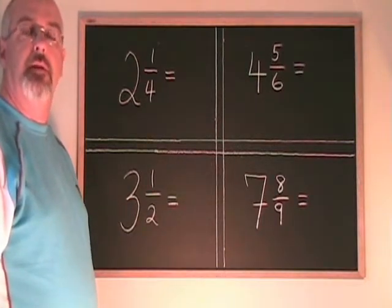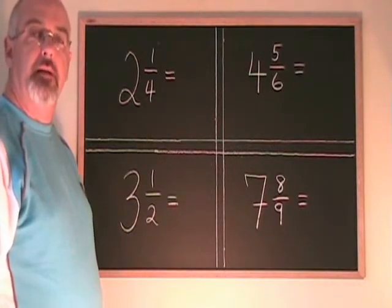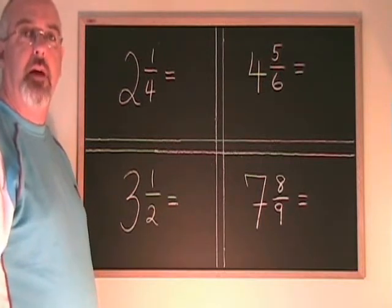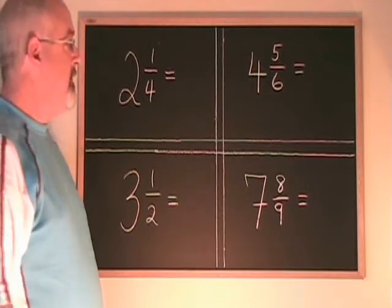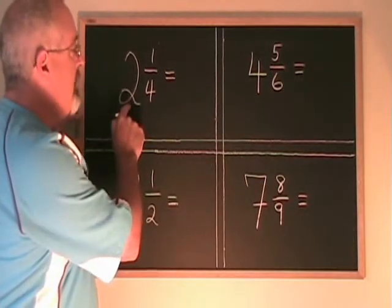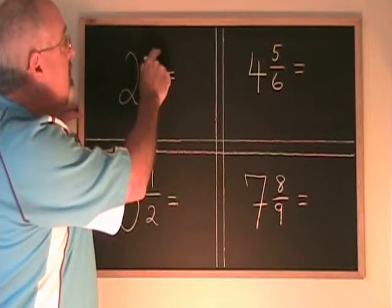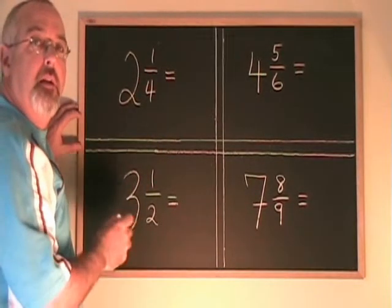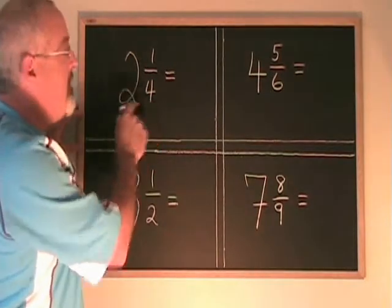Converting mixed numbers to improper fractions is a skill that is very useful when we're working with fractions. The rule is simple. The big number times the denominator plus the numerator gives the new numerator. The new denominator is the same as the old one.